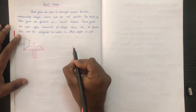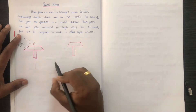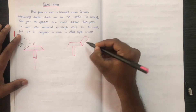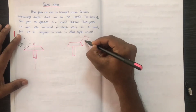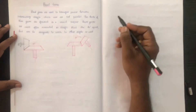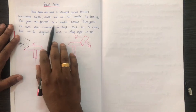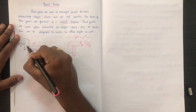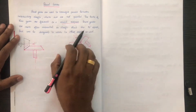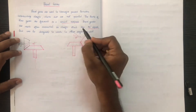It can be attached to a shaft. The axes are not parallel. Bevel gears are formed on a conical surface. Bevel gears are often mounted on a shaft. The lateral angle can be grouped at other angles.